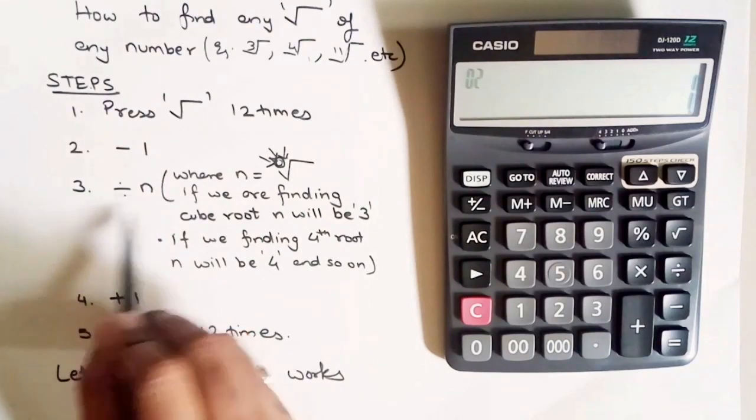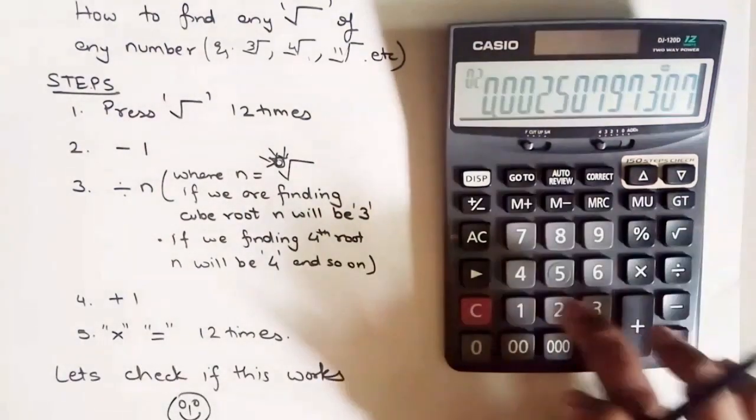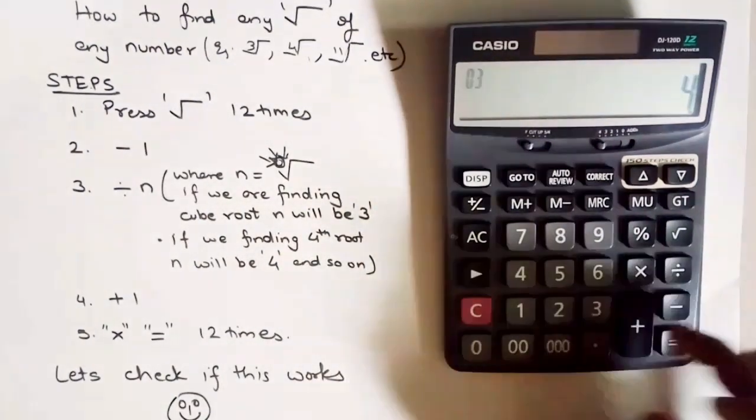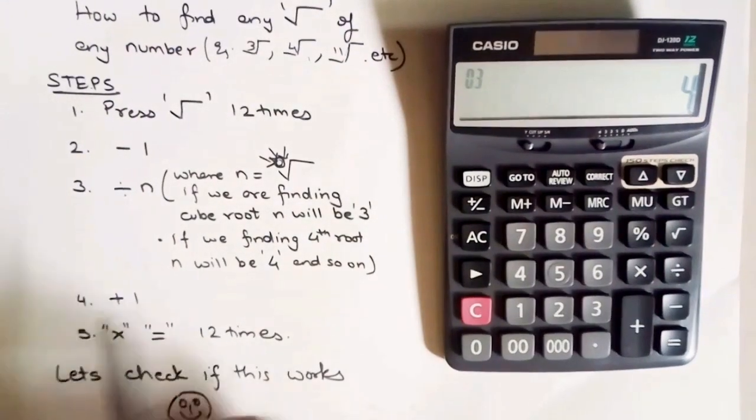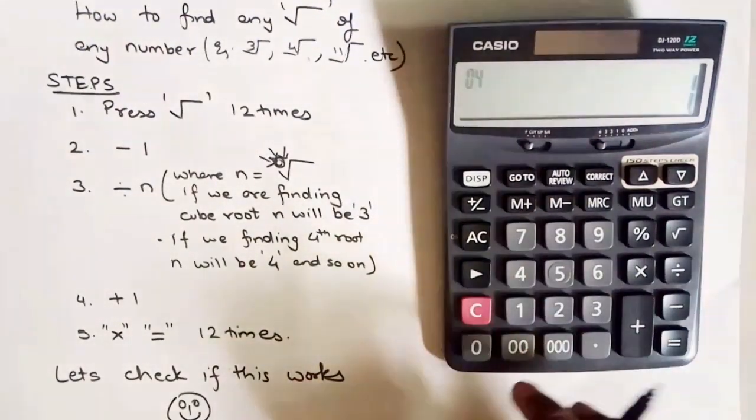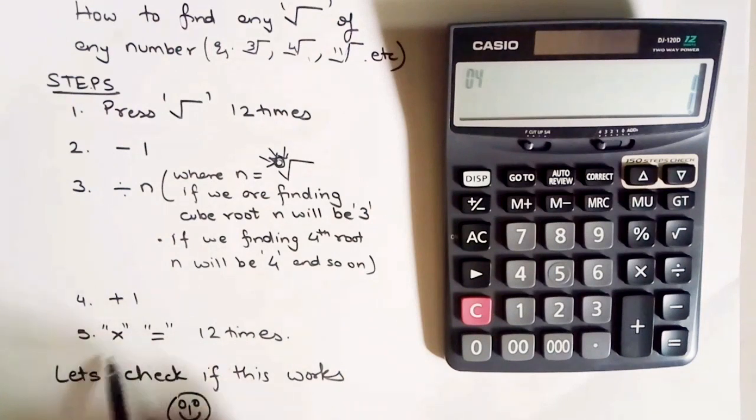Divide by n. 4th root we're finding so n will be 4, divide by 4. Then plus 1. 4th step is plus 1, and final step, multiply equals 12 times.